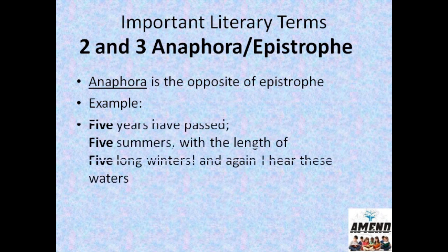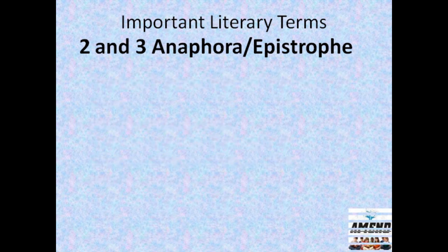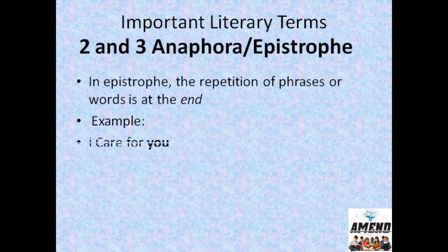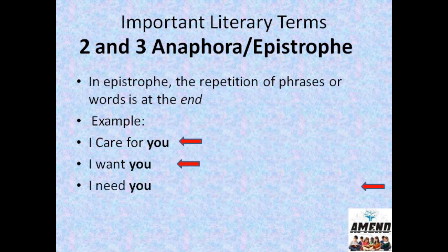In symploce, both beginning and end are repeated — for example: 'Five years have passed, five summers with the length of five long winters, and again I hear these waters.' For epistrophe, the word is repeated at the end of successive sentences — for example: 'I care for you, I want you, I need you' — so 'you' has been repeated many times, making this an example of epistrophe.